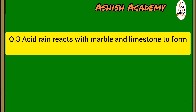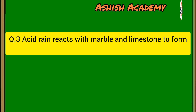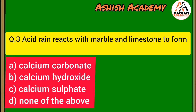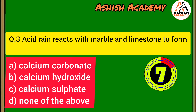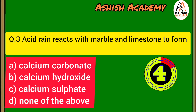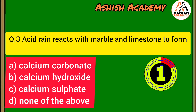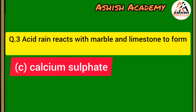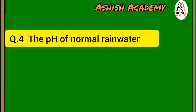Next question: Acid rain reacts with marble and limestone to form what? Correct answer: calcium sulfate is the correct option.